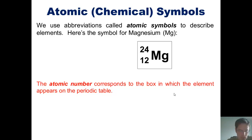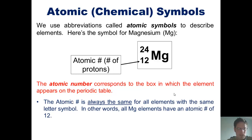Looking at the symbol, we should recognize that magnesium's atomic number, which appears as a subscript to the lower left of the atomic symbol Mg, corresponds to the box in which magnesium appears on the periodic table.